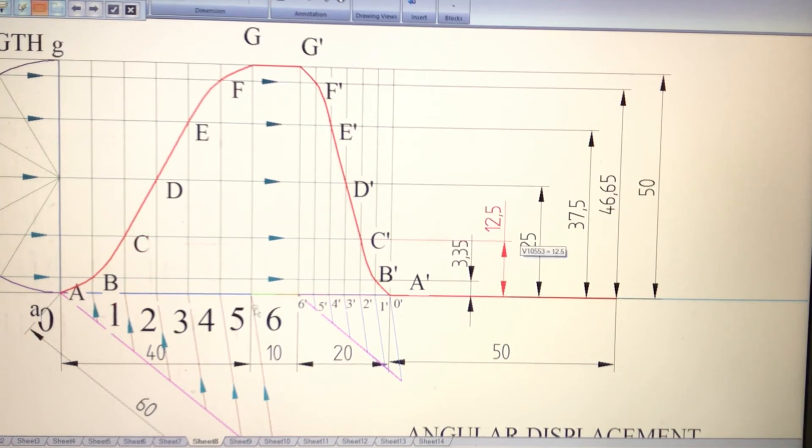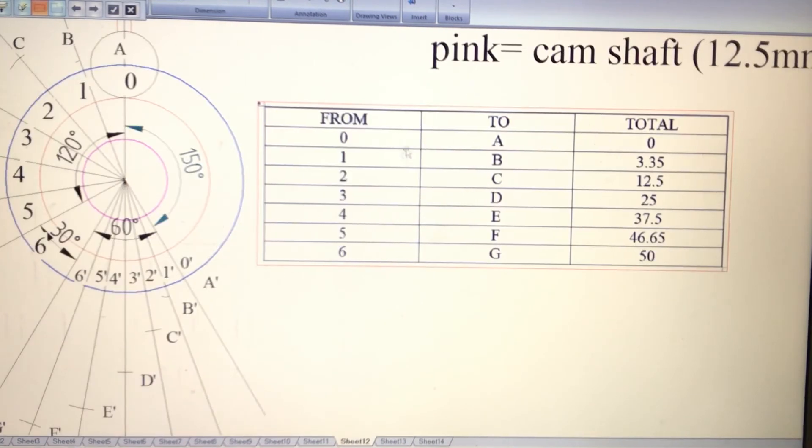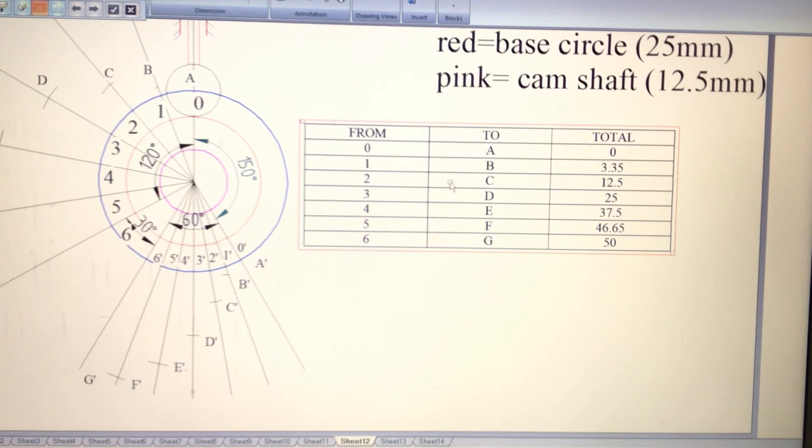3 to D is 25. So for my convention, I took a table, but you can directly transfer all the displacements using your compass from the displacement drawing. Here I am using this table: 0 to A is 0, 1 to B is 3.35, 2 to C is 12.5, 3 to D is 25. Next, 4 to E is 37.5, so you draw arcs from each point. 5 to F is 46.65.